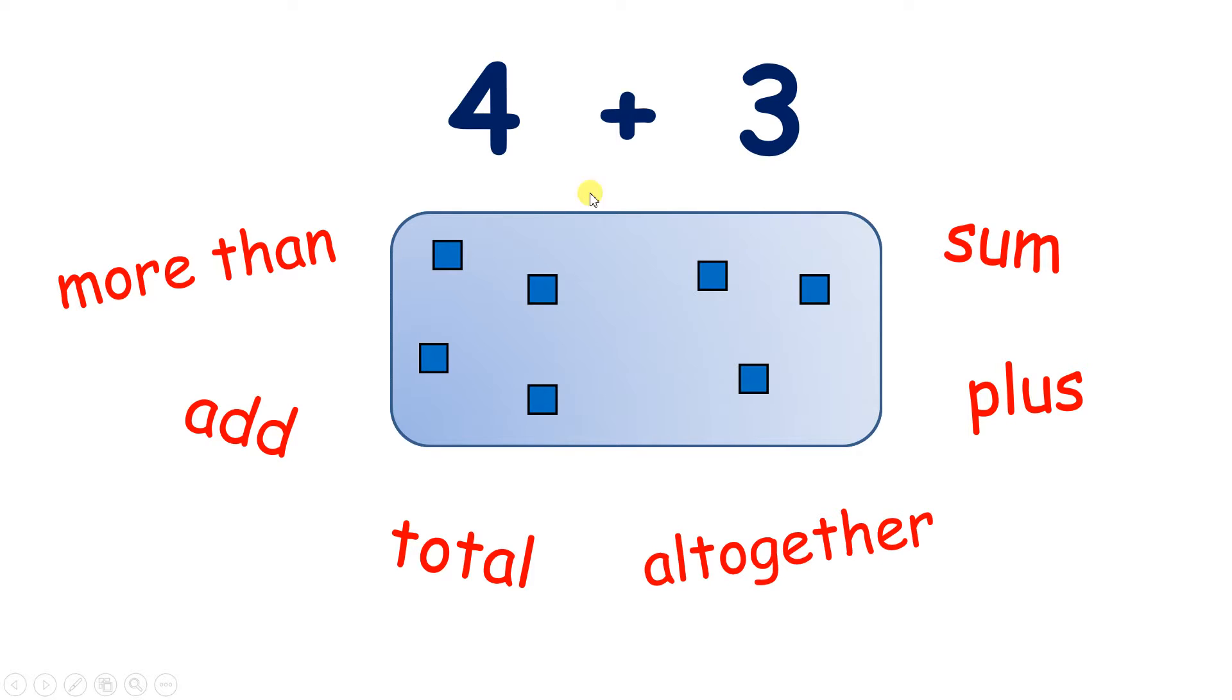So four add three equals, and that's the symbol we use for equals. It means it's the same as four add three equals seven.